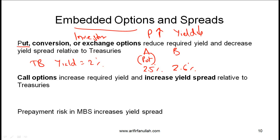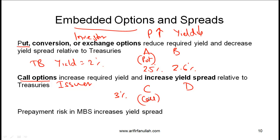You can use the same logic for other options that benefit the investor. With an embedded call option, the situation is reversed because the call option benefits the issuer, not the investor. So if bonds C and D are similar but bond C has an embedded call option and bond D does not, and the yield on callable bond C is 3%, the yield on bond D will be lower. Investors don't like the call option and hence demand a slightly higher yield to invest in bond C.